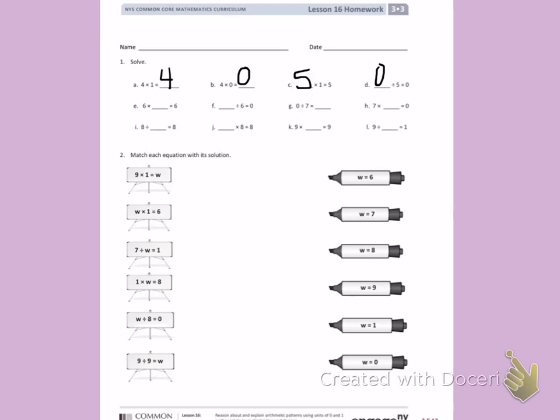Letter E, 6 times blank equals 6. Anything multiplied by 1 equals the same number. F, blank divided by 6 equals 0. Anything divided by 0 equals 0. 0 divided by 7. Again, anything divided by 0 equals 0.